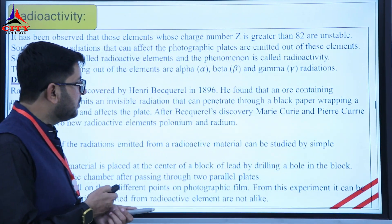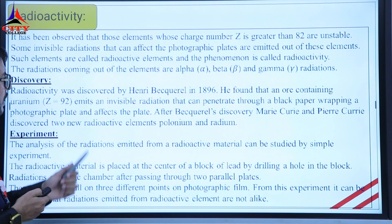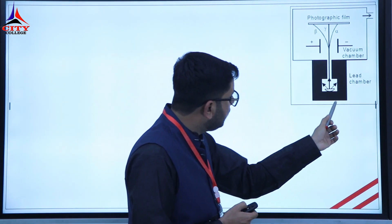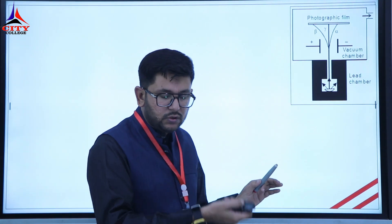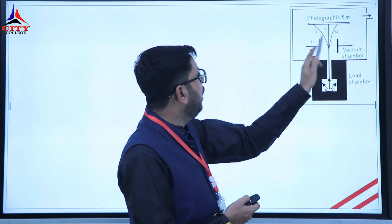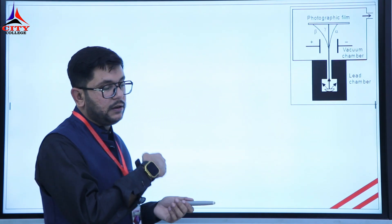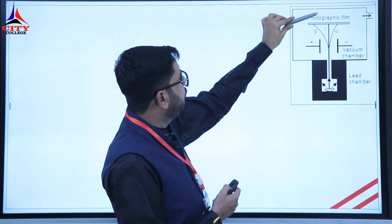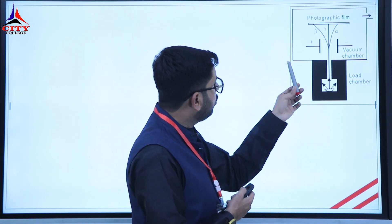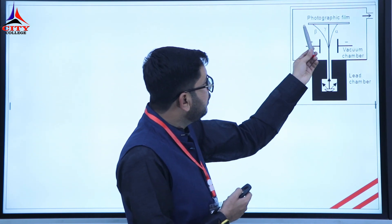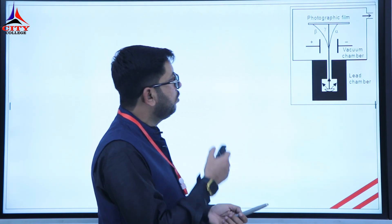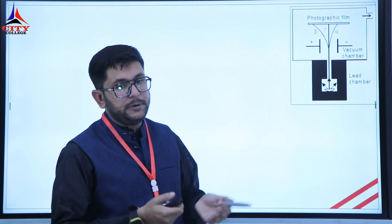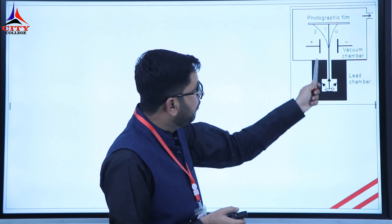If we talk about the experimental setup, we will have a lead chamber as the source of the radioactive element. We have a vacuum chamber where a potential is provided — positive and negative. Radiations emitted are directed upward toward a photographic plate. On observing the photographic plate, three different marks were found at three different points, showing that three different types of radiations were emitted. An important point to remember, students: gamma is a radiation, while alpha and beta are particles.